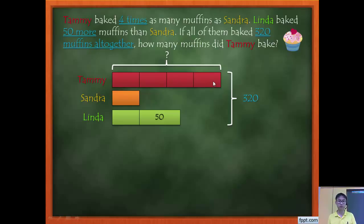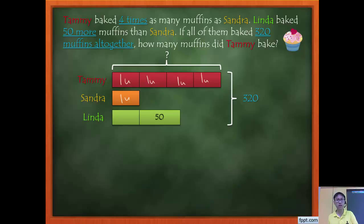Let's solve it. The strategy I'm going to use is the unitary method — making everything in terms of units. Each box is one unit: Tammy has four units, Sandra has one unit, and Linda has one unit plus an extra 50. This extra 50 is not a unit, so I cannot simply say all units equal 320.